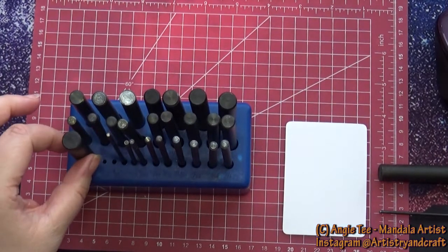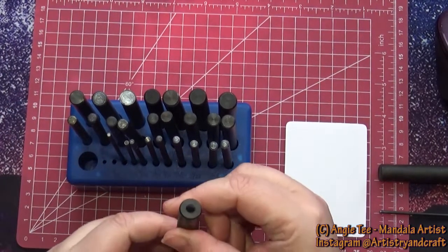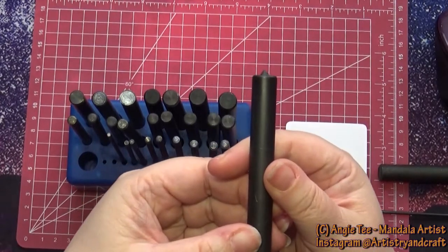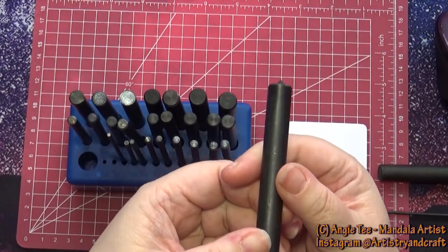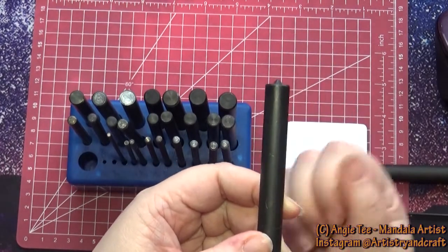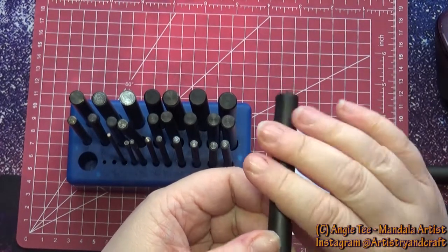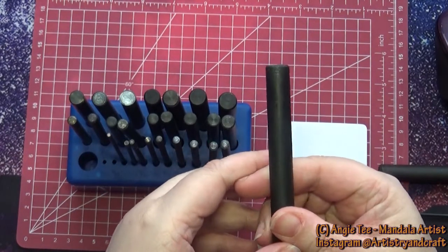If you use them the way around that they come, there's actually a point on the end. It's quite a big point and you don't want to be using that because that's not going to give you the circle that you want. It's the opposite end.